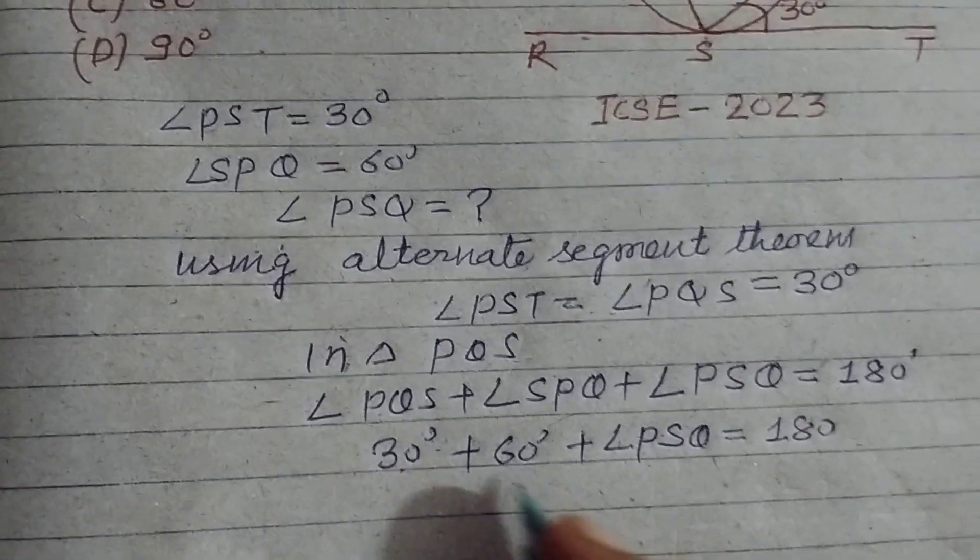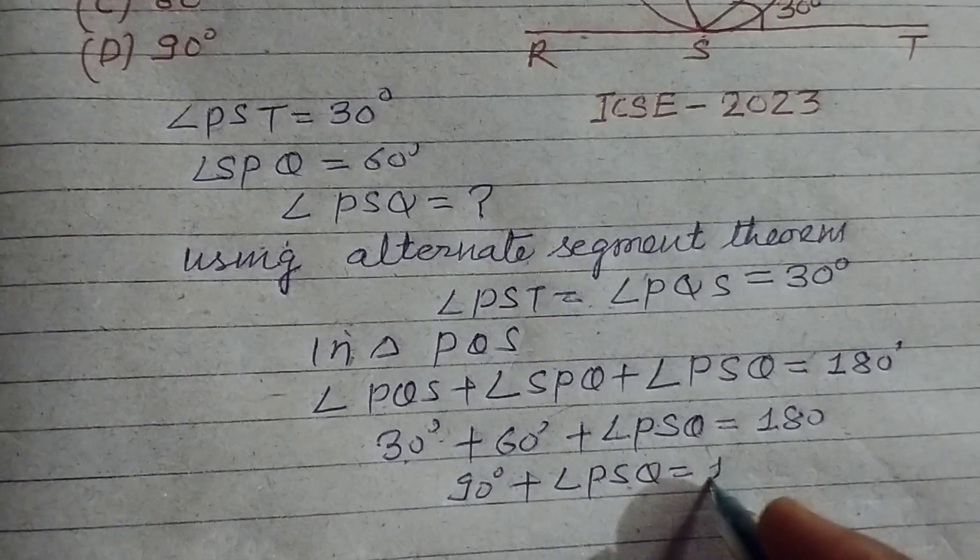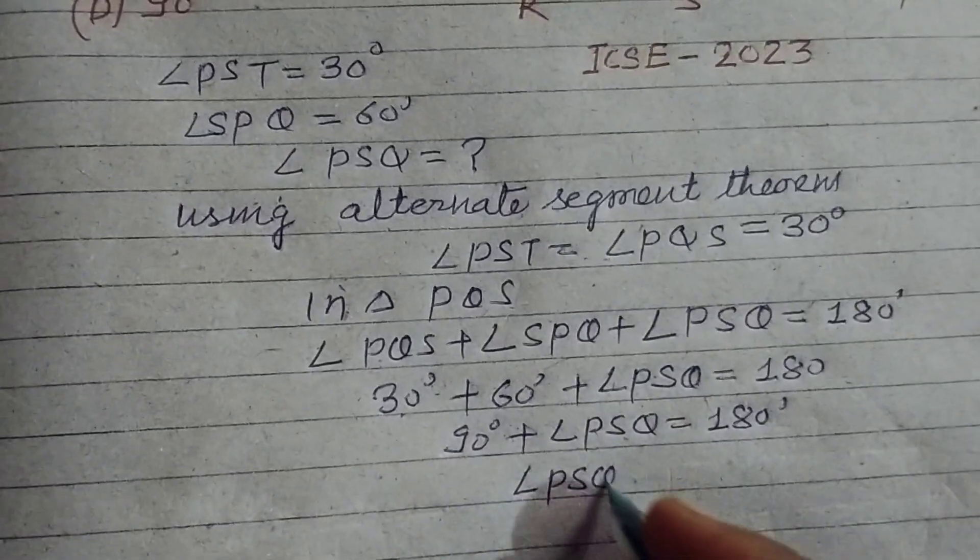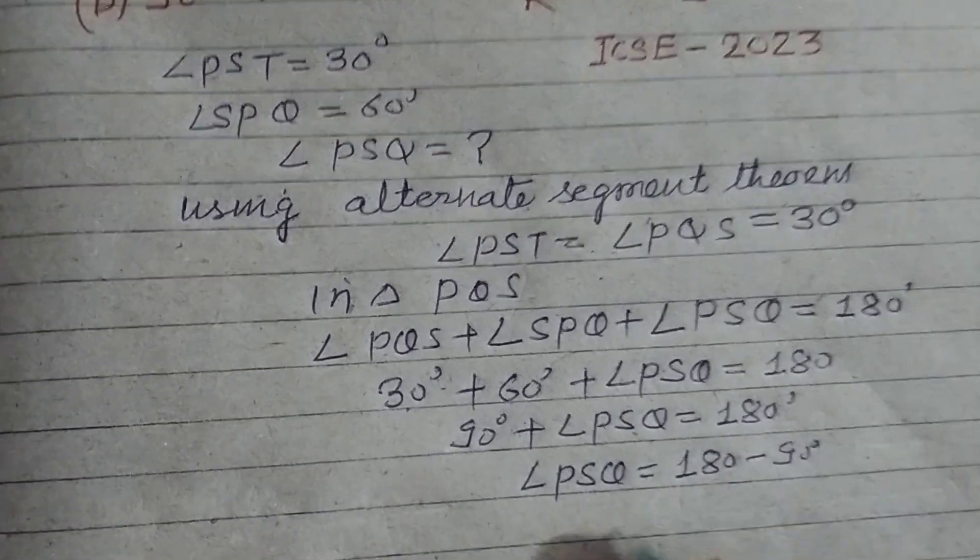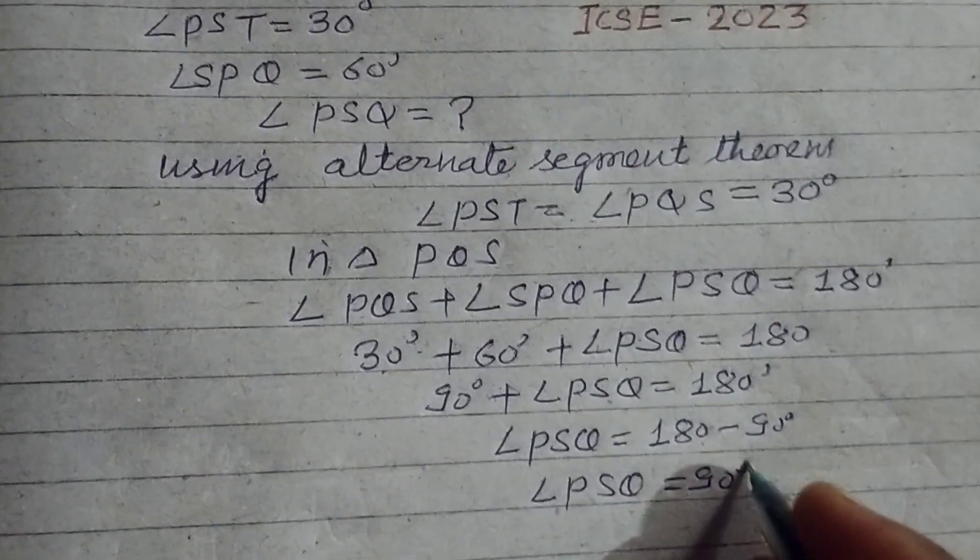30 plus 60, this is 90 plus angle PSQ equal to 180. Therefore angle PSQ equal to 180 minus 90, angle PSQ equal to 90 degrees.